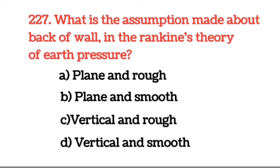Next question: What is the assumption made about the back of wall in Rankine's theory of earth pressure? Answer: Vertical and smooth. Earth pressure के Rankine's theory में back of wall के लिए assumption लेते हैं कि wall जो है उसका back of wall vertical और smooth होना चाहिए।